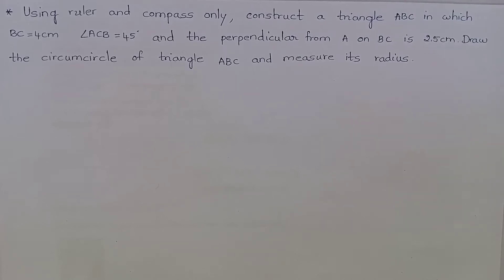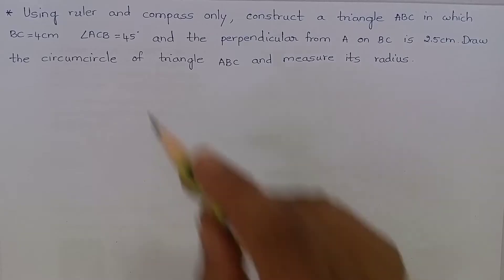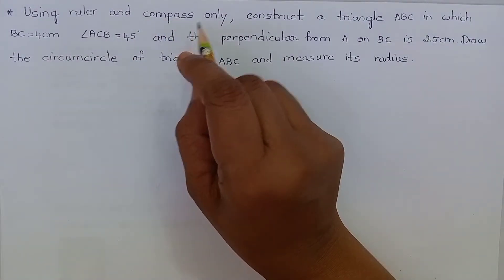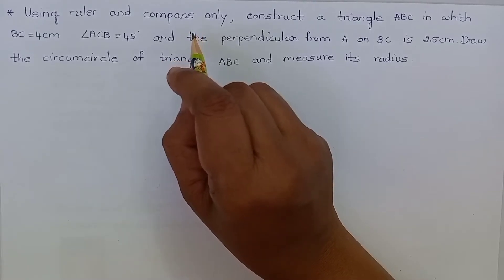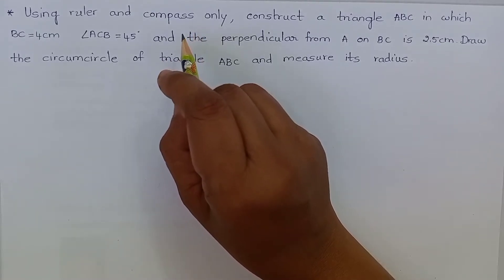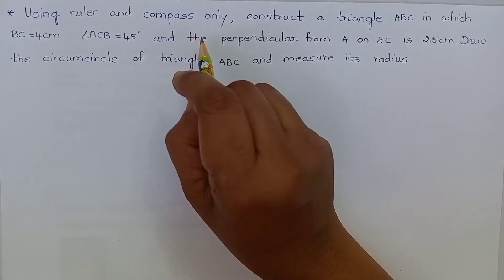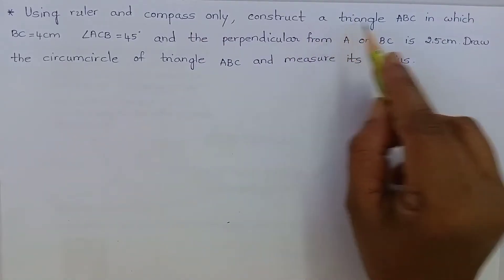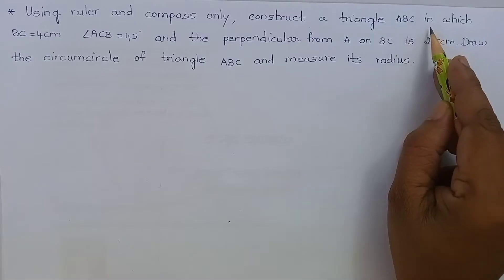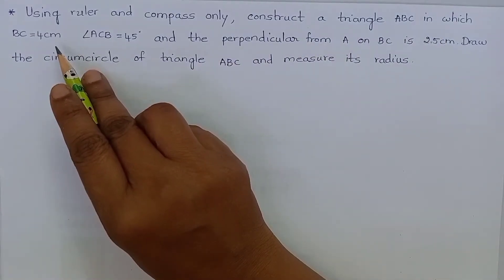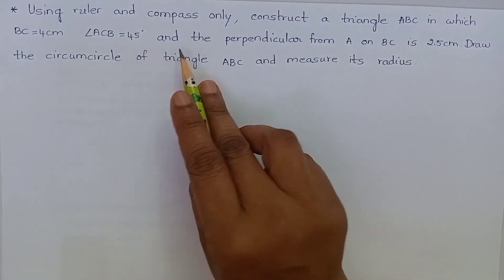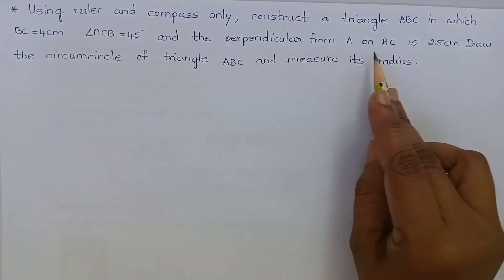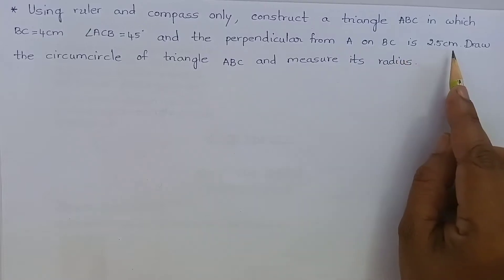Namaste. Welcome to Blishon Concept Teaching. Let's do the construction using ruler and compass only. They have given the instruction that we have to use only ruler and compass for construction. Construct a triangle ABC in which BC is equal to 4 cm, angle ACB is equal to 45 degrees, and the perpendicular from A on BC is 2.5 cm.